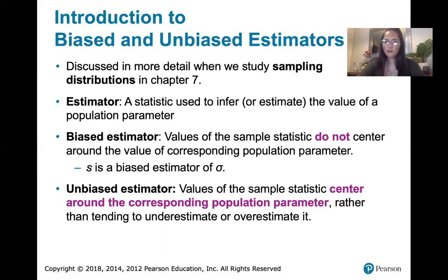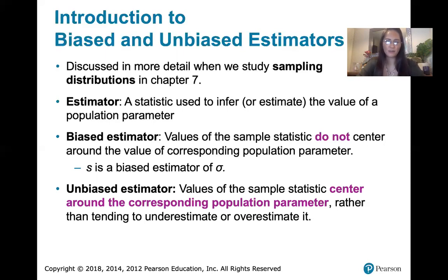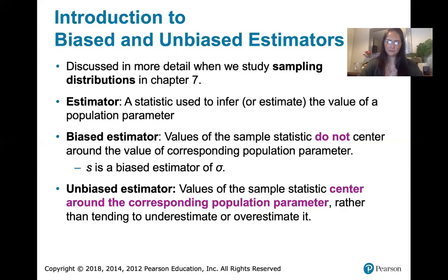If we keep creating samples that all have the same size and keep calculating sample statistics, and then we look at the mean of those sample statistics, if we were to do it infinitely many times, it would give us exactly the value of the corresponding population parameter. Rather than tending to overestimate or underestimate it, the sample statistic would tend to be a good estimate of the true value of the population parameter.